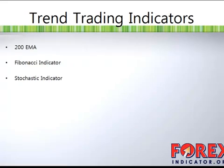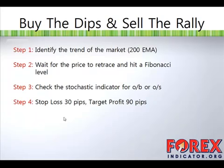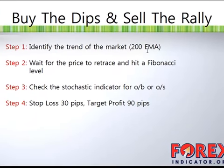So let's go through the steps to trade this strategy. I call this the "buy the dips and sell the rally" strategy. If you are in a strong uptrend, the price will retrace — as it comes down, you buy the dips. Every time the price retraces, you buy the dips and profit from it. If in a downtrend, when the price retraces, you sell the rally.